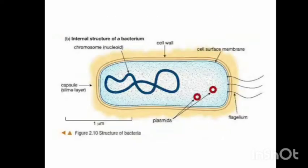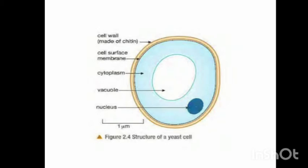Now we look at the structure of bacteria. Bacteria are single-celled organisms. As you can see, they have a cell wall, cell membrane, and cytoplasm, but they do not have a nucleus. Some bacteria may also have a flagellum, which helps them to move. Bacteria also have circular structures called plasmids.